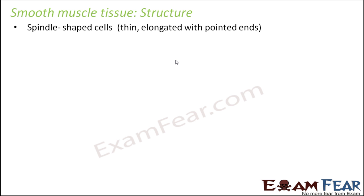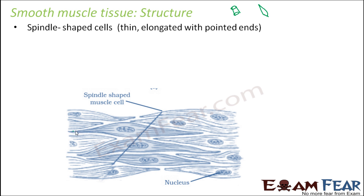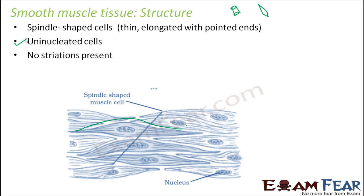Let us look at the structure of smooth muscles. They are spindle-shaped cells — thin and elongated with pointed ends. When we were talking about skeletal muscle tissue, they were long and cylindrical, but here they are spindle-shaped, with pointed tips. They are uninucleated cells — that is also one major difference from skeletal muscle tissue, which has multiple nuclei. No striations are present, so you do not see those alternate dark and bright bands.